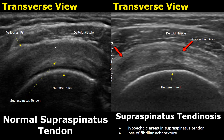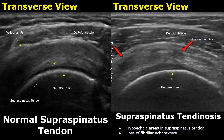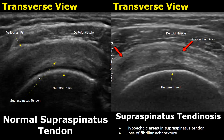We start off by scanning the supraspinatus tendon in transverse view. We see a normal supraspinatus tendon, and up here is the deltoid muscle. This hyperechoic layer is the periversal fat. This hypoechoic or anechoic region is the articular cartilage, and this hyperechoic curved structure is the humeral head.